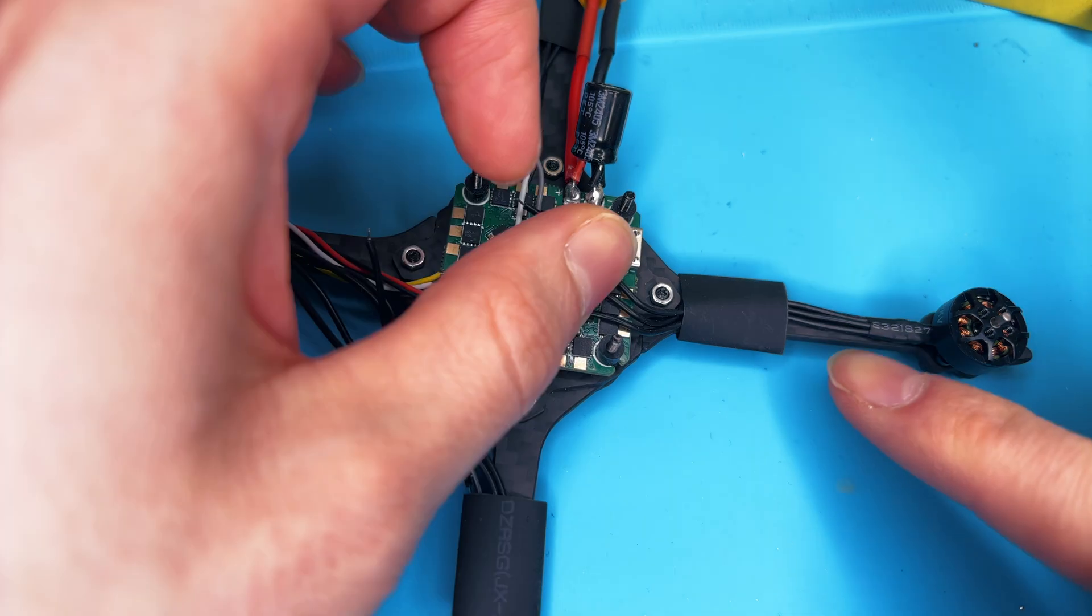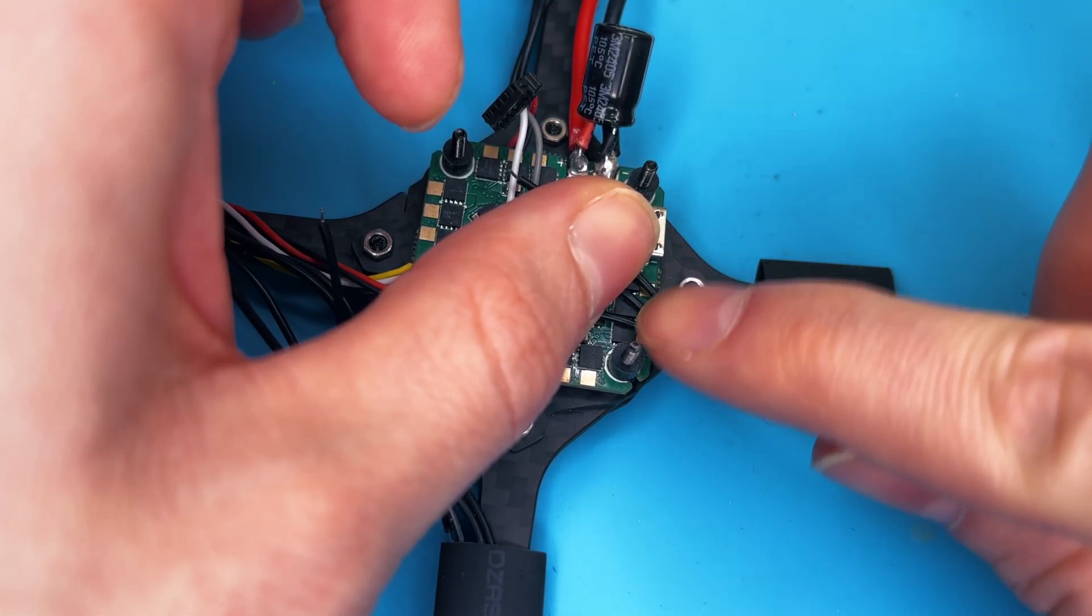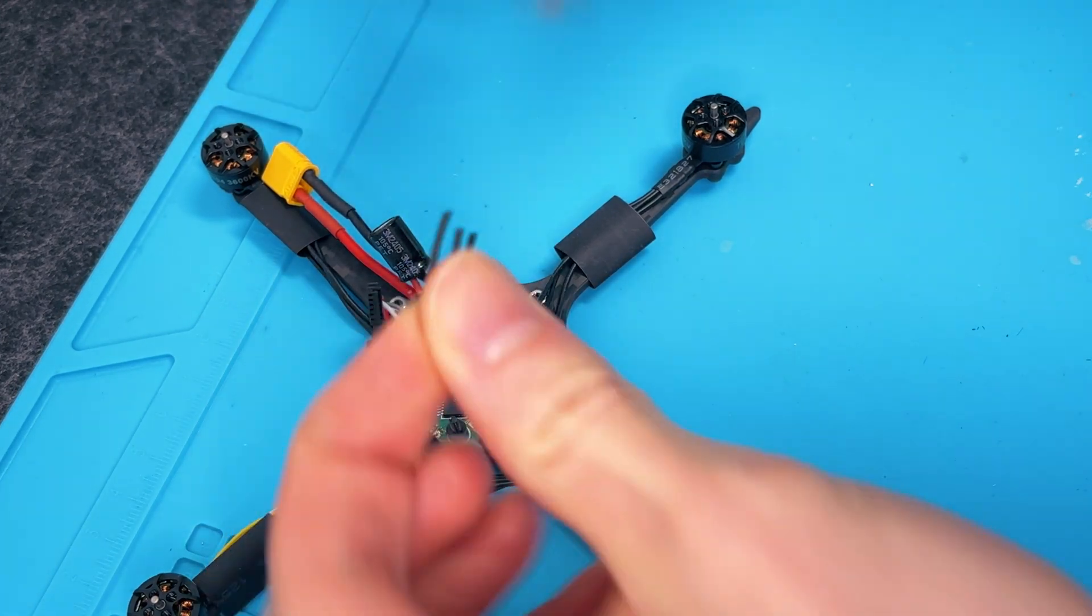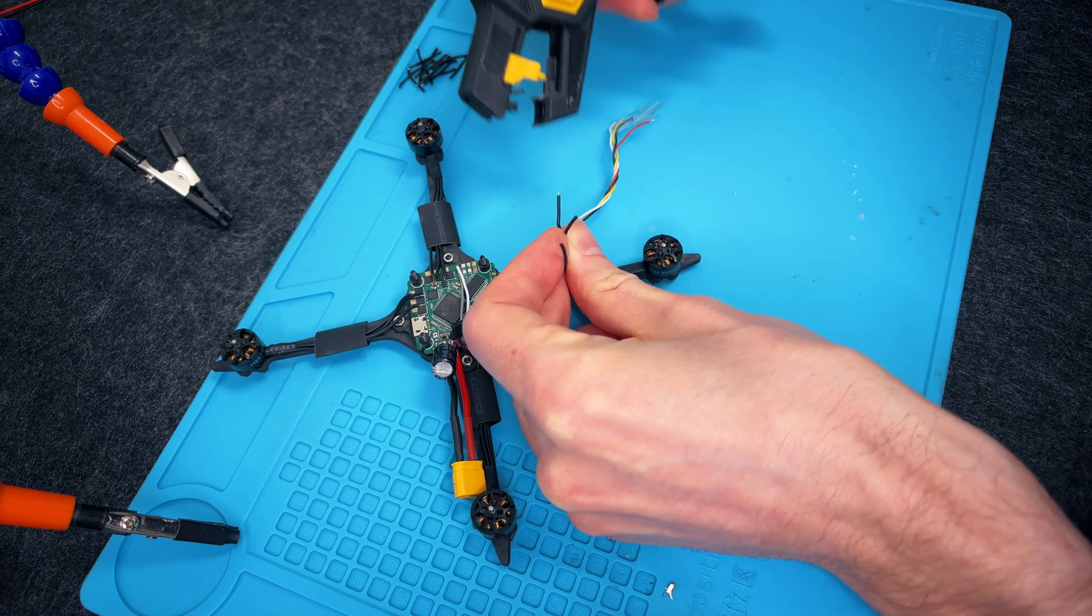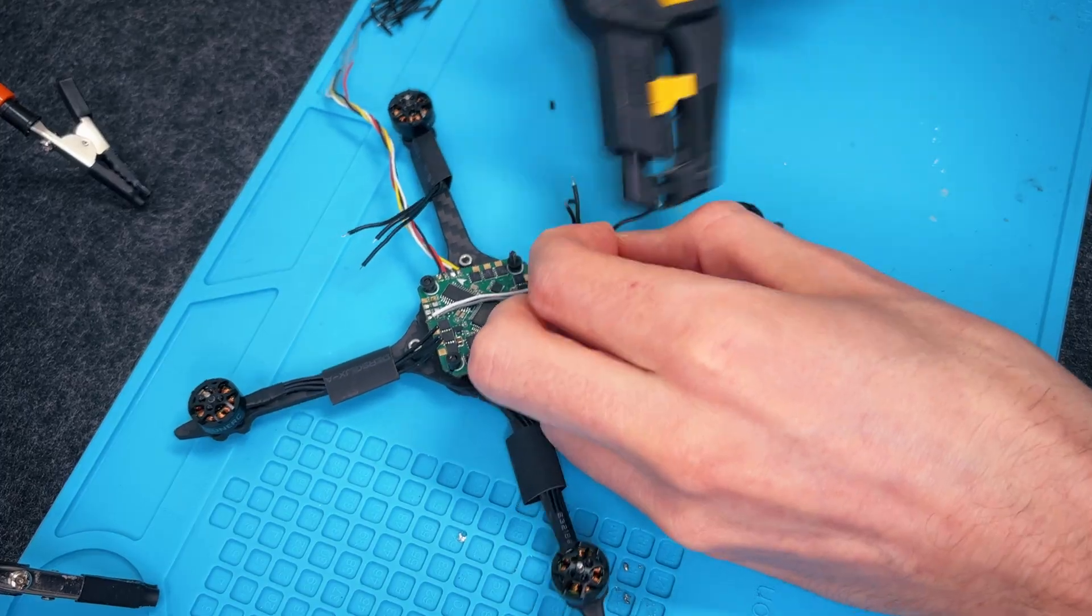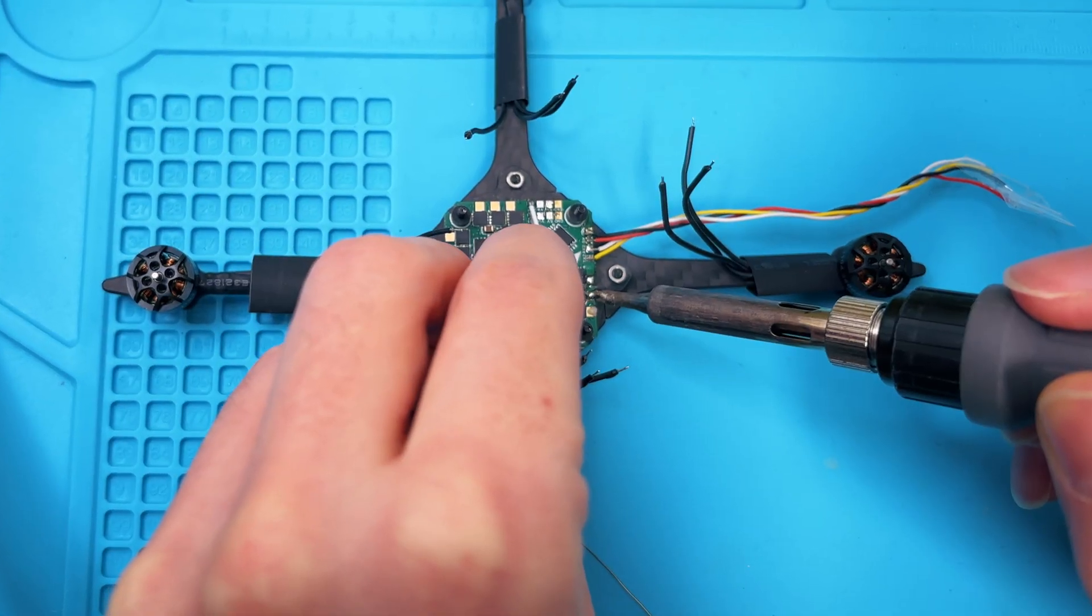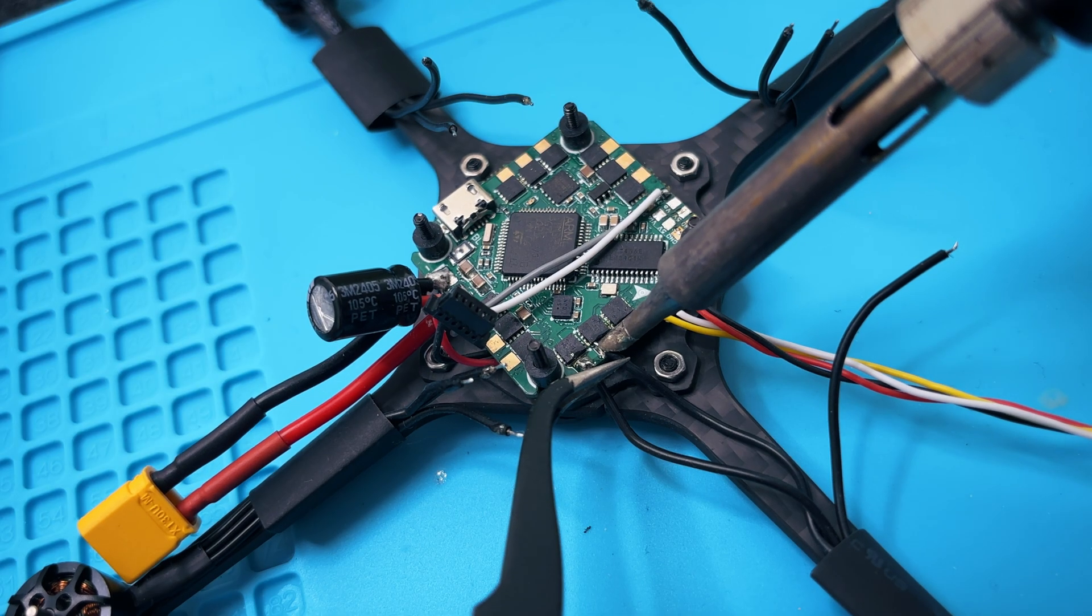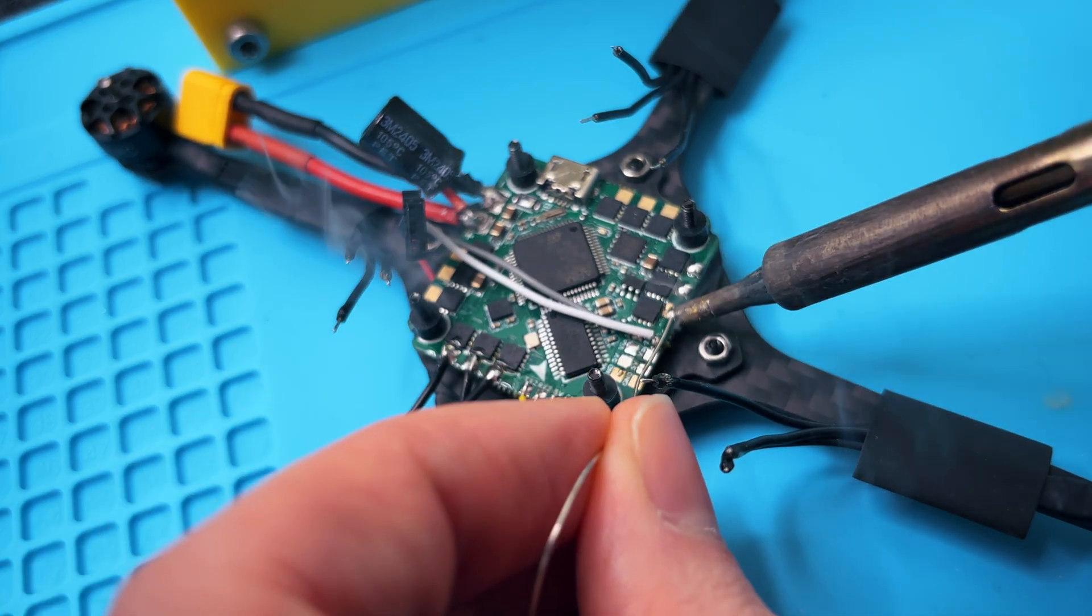Clean wiring isn't just about looks, it's about reliability. First up, motor cables. We cut them down to size, but not too short. A little slack helps prevent strain on the solder joints. Next, we strip the insulation. Quick and easy. Then, it's time to solder. Lots of heat, plenty of flux. That's the secret to strong, lasting connections. And don't stress about motor direction just yet. Betaflight lets us fix that later.